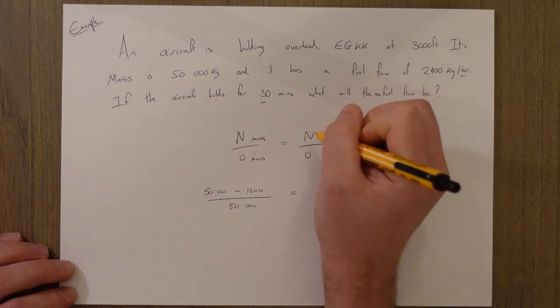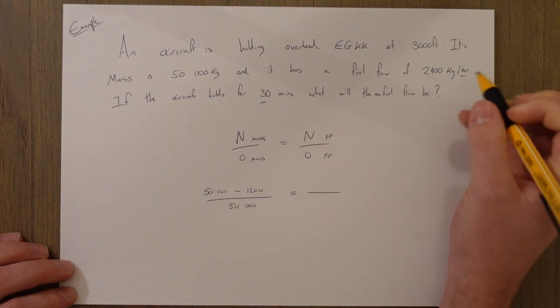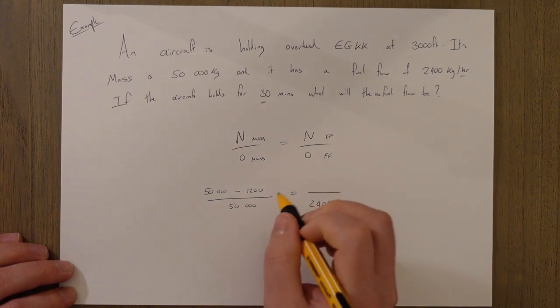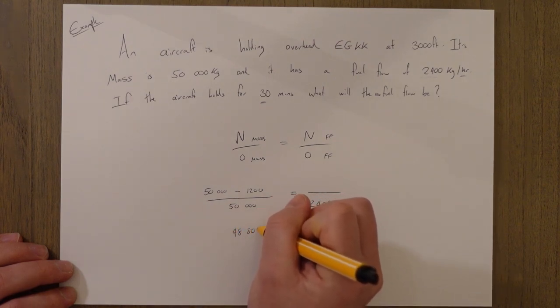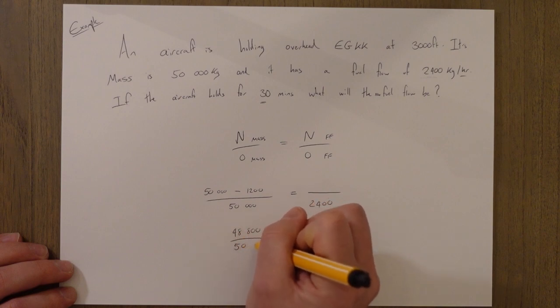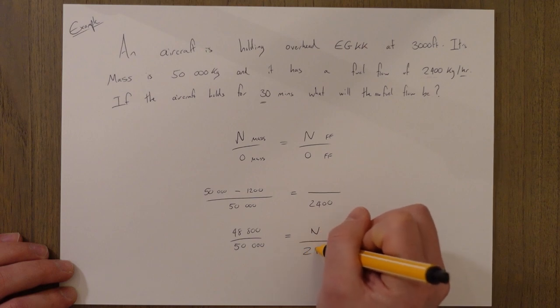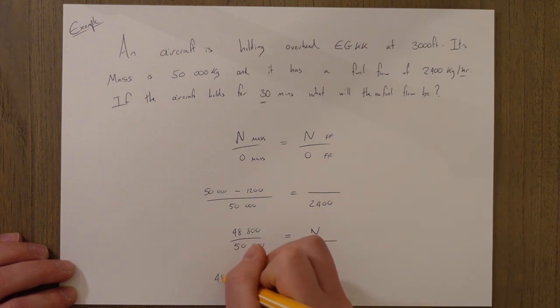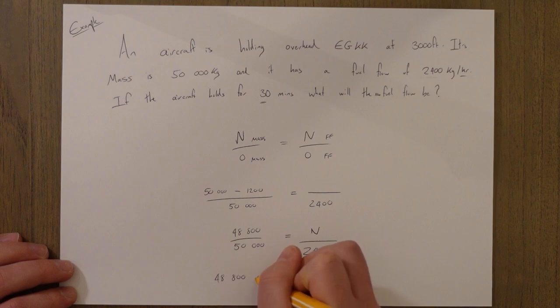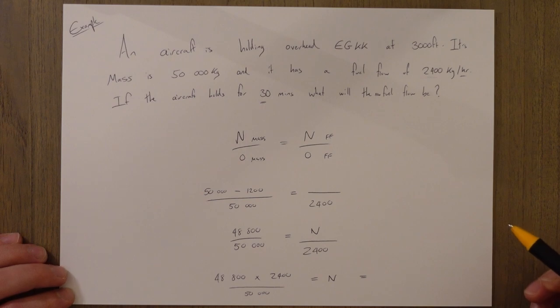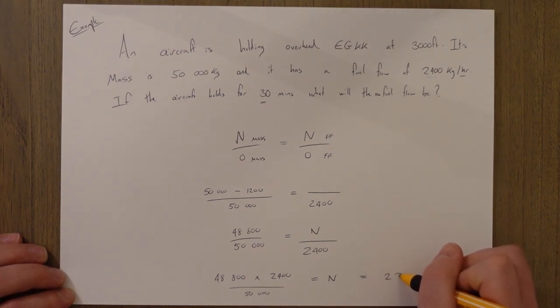And our new fuel flow is what we're trying to figure out. Our old fuel flow is 2,400. So that is 48,800 over 50,000 equals N over 2,400. Rearrange that.